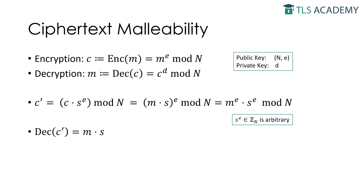Let's have a look specifically at RSA and its malleability. The encryption in RSA is defined by the message M to the power of E modulo N, where E and N form the public key. The decryption in RSA is defined by the ciphertext C to the power of D modulo N, where D is the private key. In RSA, we are able to multiply the encrypted plaintext with the factor S to the power of E without having to know the private key. When this new multiplied ciphertext C' is decrypted, it will also result in the original message M multiplied with the same factor S to the power of E. This makes the ciphertext in RSA malleable.